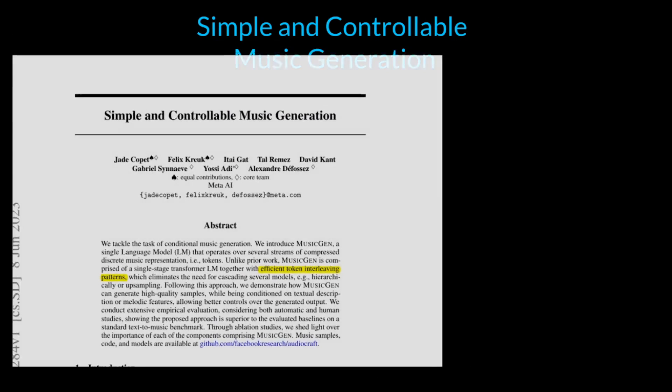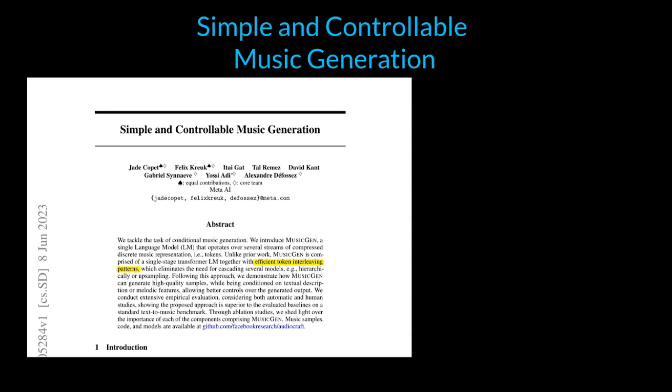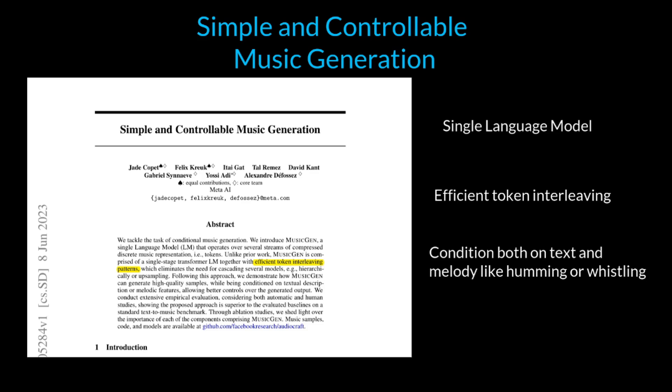Music Gen, or Simple and Controllable Music Generation, is the latest work from Meta AI, which promises to generate exceptional quality music using a single language model architecture. It achieves this using an efficient token interleaving technique. Despite generating music for a max duration of 8 seconds, it has the potential to be conditioned by text or melody as prompts to control the output generated.